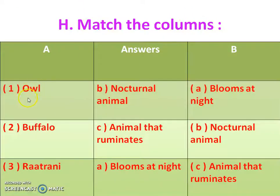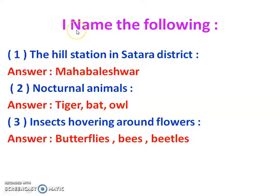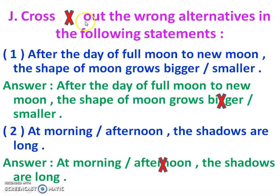Section H: Match the columns. Owl — nocturnal animal. Buffalo — animal that ruminates. Raat Rani — blooms at night. Section I: Name the following. Nocturnal animals: tiger, bat, owl. Insects hovering around flowers: butterflies, bees and beetles. Section J: Cross out the wrong alternatives. Statement 1: After full moon to new moon, the shape of the moon grows bigger or smaller? Answer: smaller — so 'bigger' is crossed out. Statement 2: At morning and afternoon the shadows are long? Answer: morning — so 'afternoon' is crossed out. Statement 3: At evening and afternoon the shadows are very short? Answer: afternoon — so 'evening' is crossed out. Statement 4: On full moon or new moon day the moon appears completely round? Answer: full moon — so 'new moon' is crossed out.